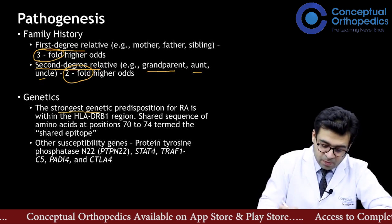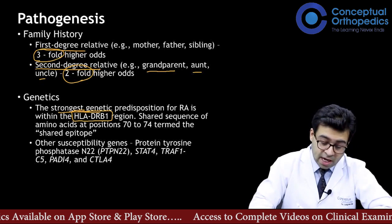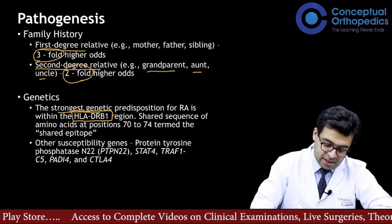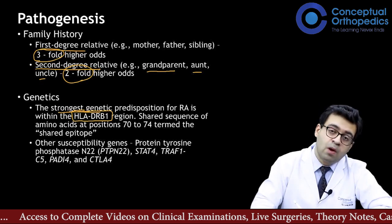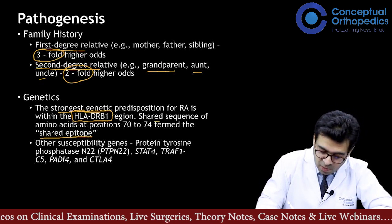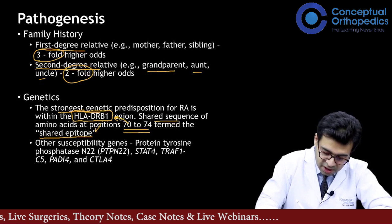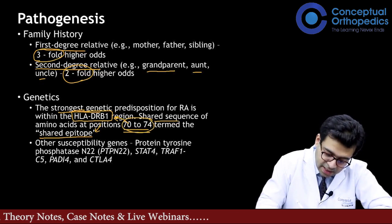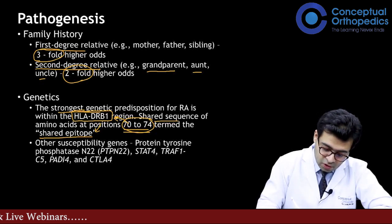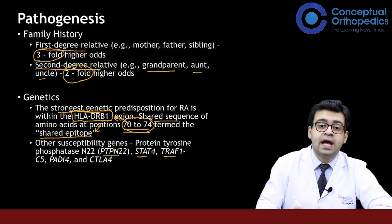The strongest genetic predisposition for RA lies within the HLA-DRB1 region. This gene encodes for proteins called HLA — human leukocyte antigen — which are involved in antigen presentation and mounting an immune response. The term 'shared epitope' refers to a small sequence of amino acids at positions 70 to 74 in this region of HLA-DRB1 that predisposes to development of rheumatoid arthritis. Other genes known to be involved include PTPN22, STAT4, TRAF1, PADI4, and CTLA4.